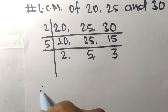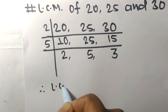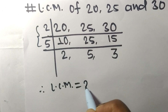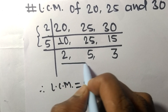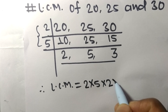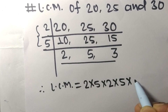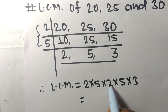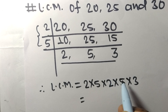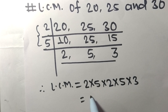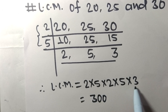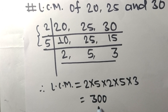Therefore the LCM is equal to the product of all divisors and remaining quotients: 2 times 5 times 2 times 5 times 3. So 2 times 5 is 10, 10 times 2 is 20, 20 times 5 is 100, and 100 times 3 is 300. By multiplying all these numbers we get 300.